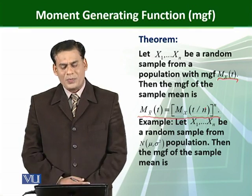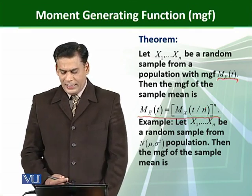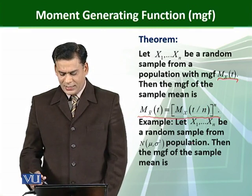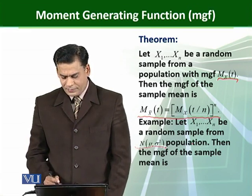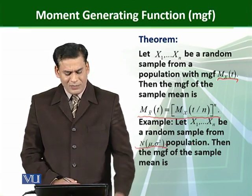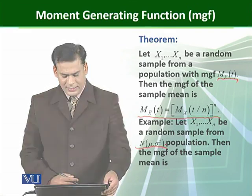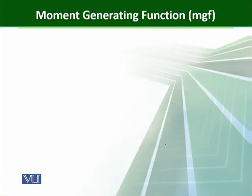Let us understand this with an example. Let X1, X2, ..., Xn be a random sample from a normal population with mean mu and variance sigma squared. Then the moment generating function of the sample mean is obtained as follows. We should know the normal moment generating function: M_X(t) = e^(μt + (1/2)σ²t²). This is the MGF of the normal distribution with mean mu and variance sigma squared.